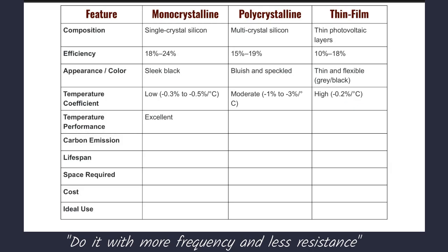The next feature is temperature performance. Mono-crystalline solar panels have excellent temperature performance, performing well in both low light and high temperature conditions. Poly-crystalline panels also perform well, but slightly lower than Mono-crystalline. Thin-Film panels are also good for temperature performance, but give less performance when compared to both Mono-crystalline and Poly-crystalline.